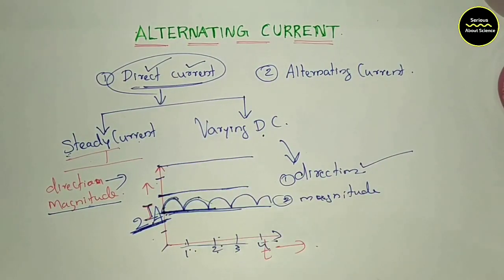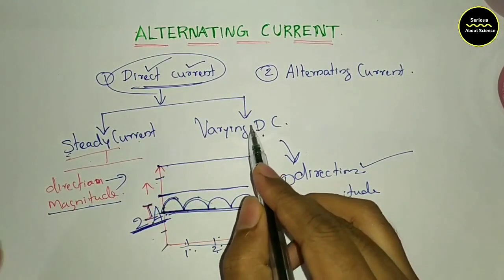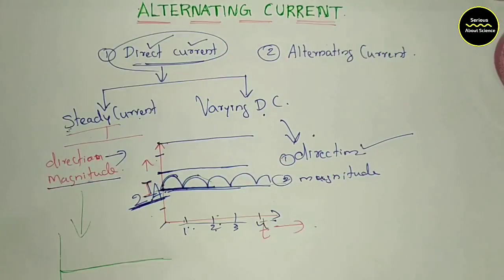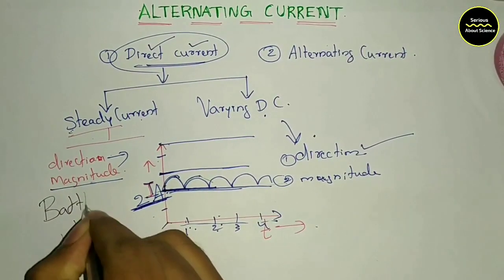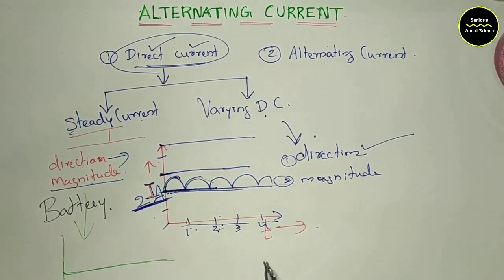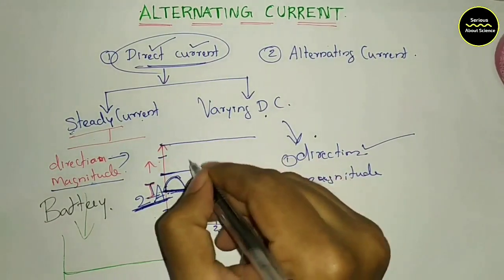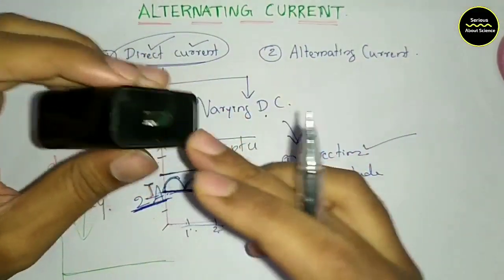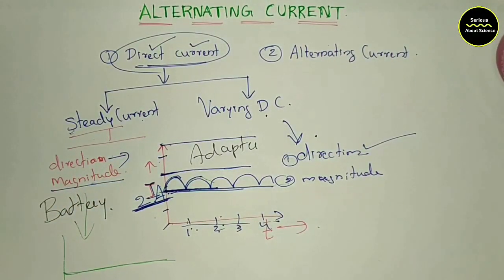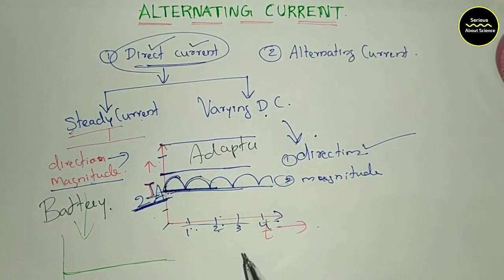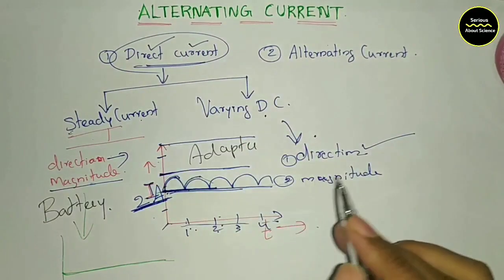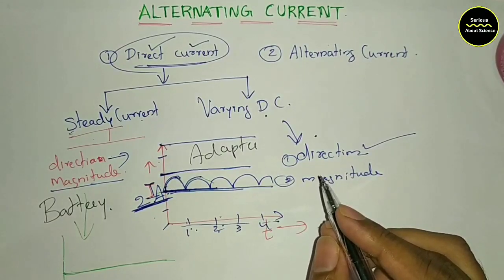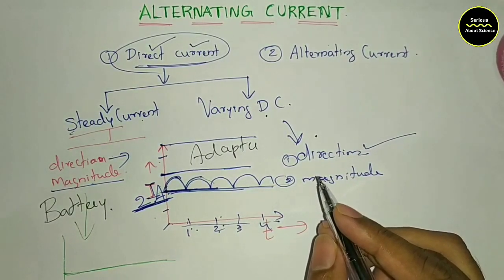You can see the two types of direct current: steady current and variable direct current. The battery is steady current — we know that the battery is steady current. The adapters are varying direct current. The cellular battery is a direct current. In this chapter, we are going to go to alternating current, AC.